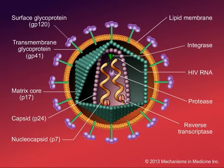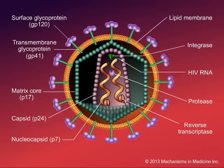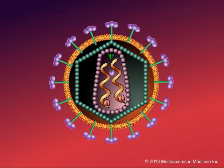And finally, in the inner core, you see that there are two strands of viral RNA, which are associated with three of the enzymes that are essential for virus replication. These are the integrase, the protease, and the reverse transcriptase.